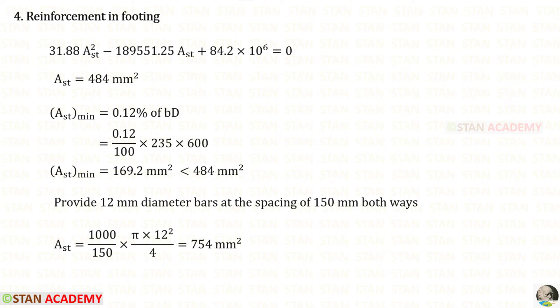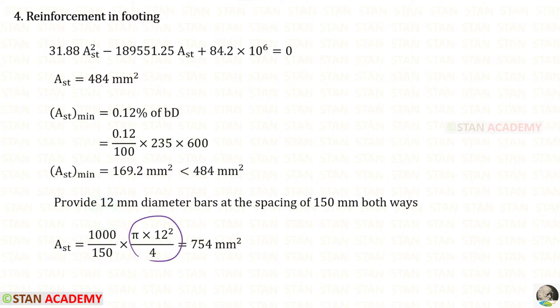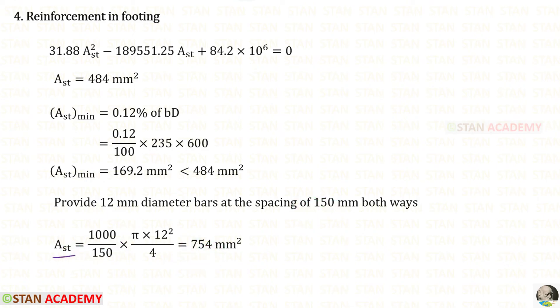We provide 12 millimeter diameter bars at a spacing of 150 millimeter on both ways of the footing. The AST per unit meter length equals the area of the rebar multiplied by 1000 upon the spacing, giving an area of 754 mm².